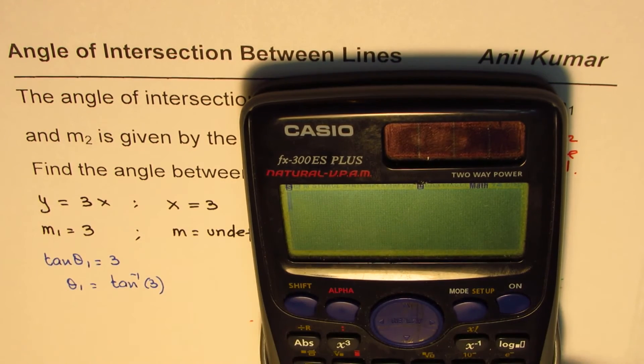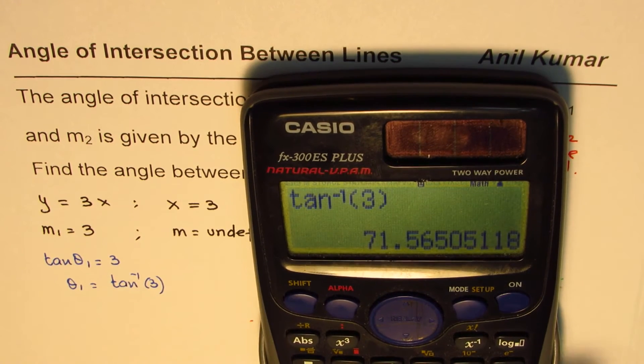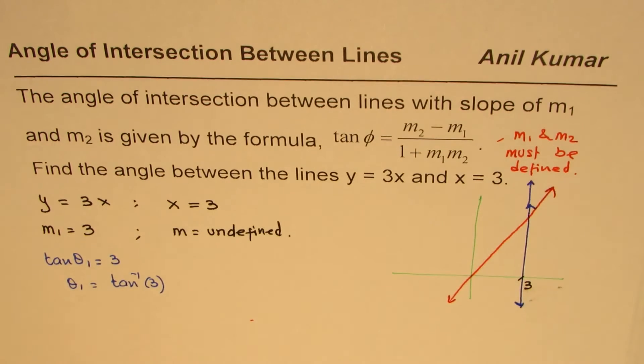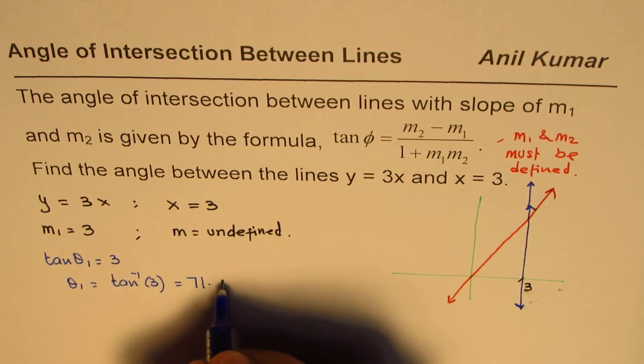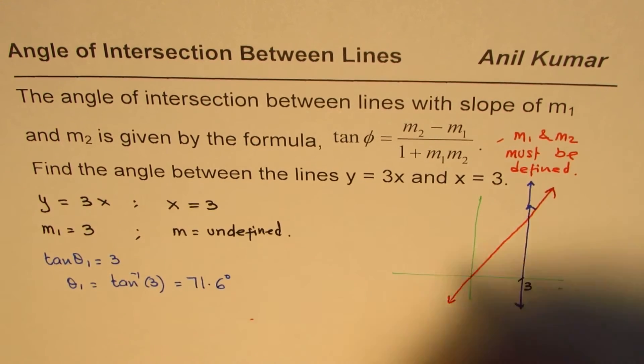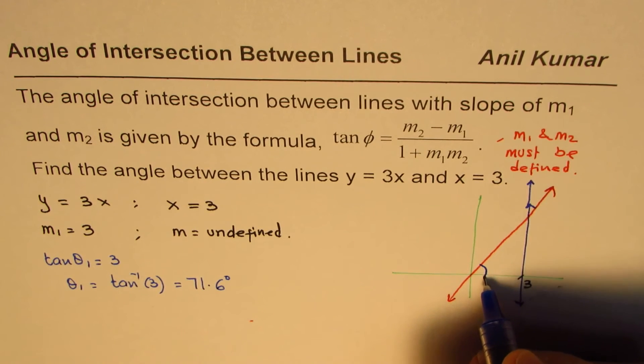So we have shift tan inverse of 3, bracket close, equal to 71.56. Let us say this is 71.6 degrees. So this angle here is the angle we are talking about, 71.6.